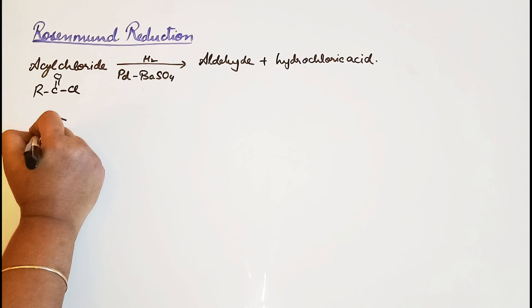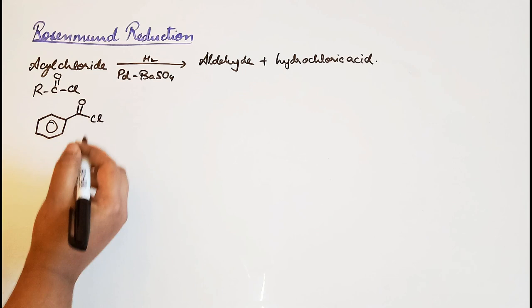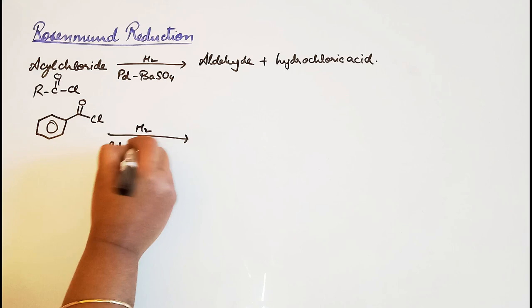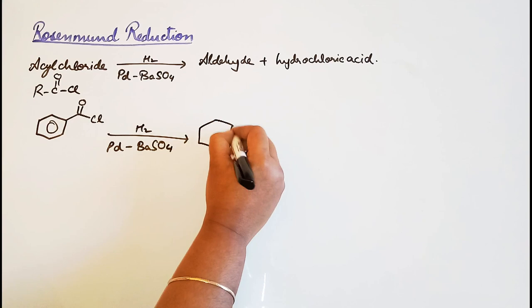We will start with taking the benzene ring, so benzoyl chloride reacts with hydrogen, palladium, and barium sulfate to lead to the formation of benzaldehyde and hydrochloric acid.